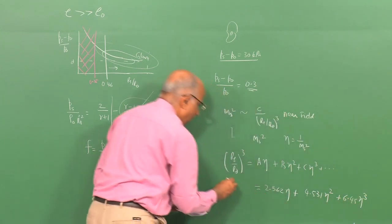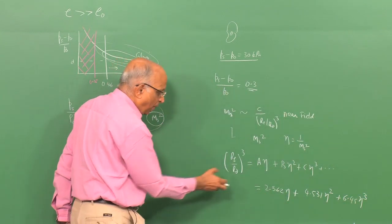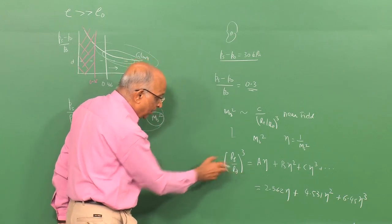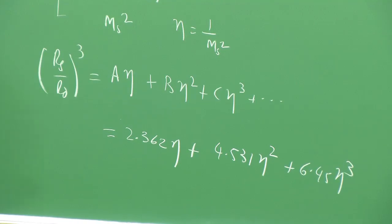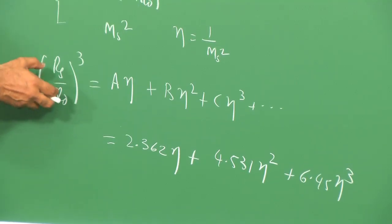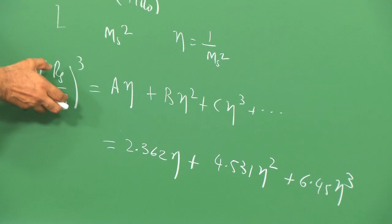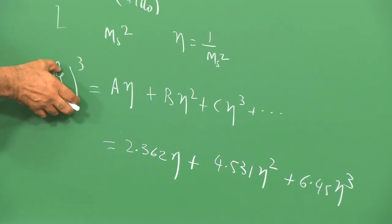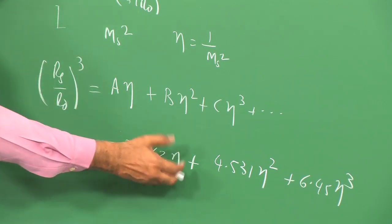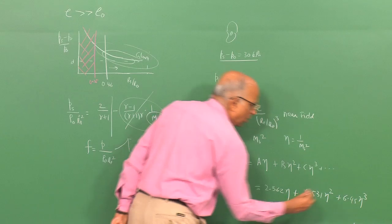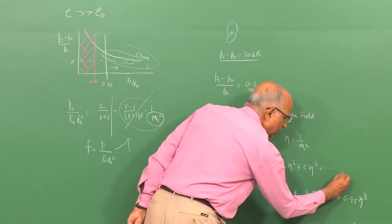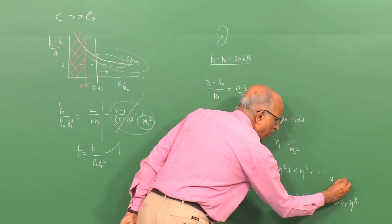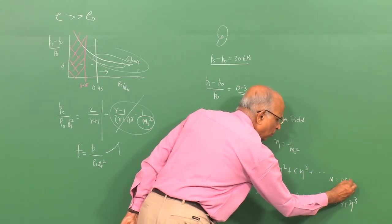The expression obtained by Professor Bach and Lee at McGill University is: (Rs/R0)³ = 2.362·eta + 4.531·eta² + 6.45·eta³, where eta = 1/Ms². This was found to match well for Mach numbers as low as about 1.5 to 2.